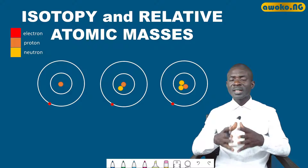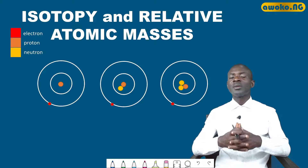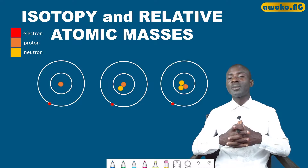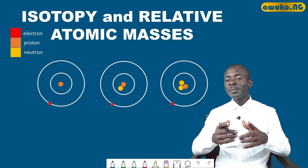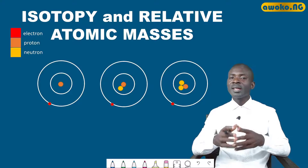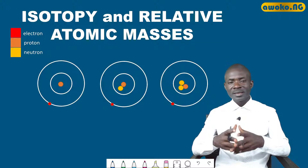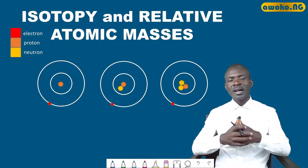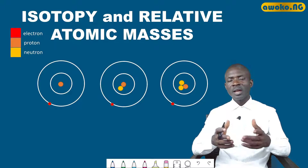That explains why the relative atomic masses of some elements are not whole numbers — it is simply because the element exists as isotopes.